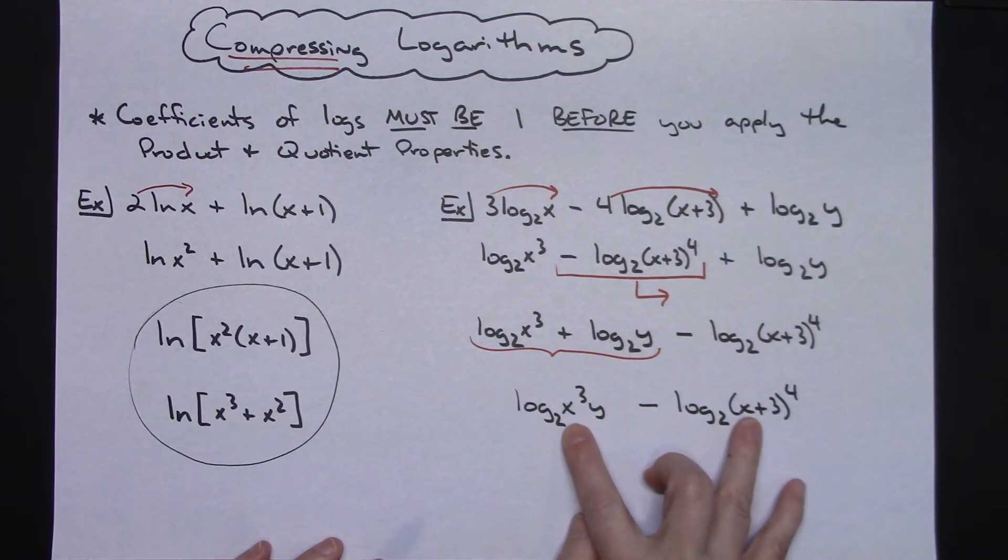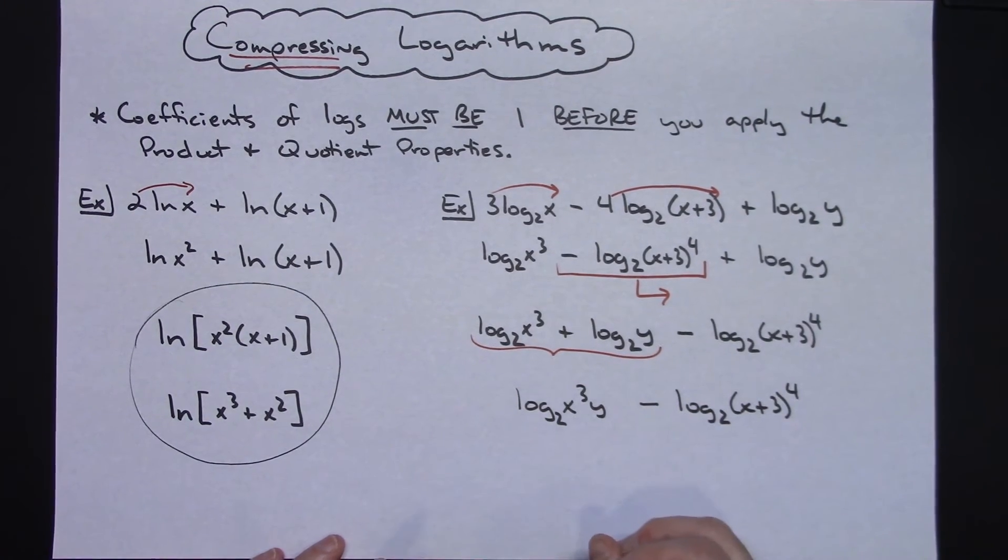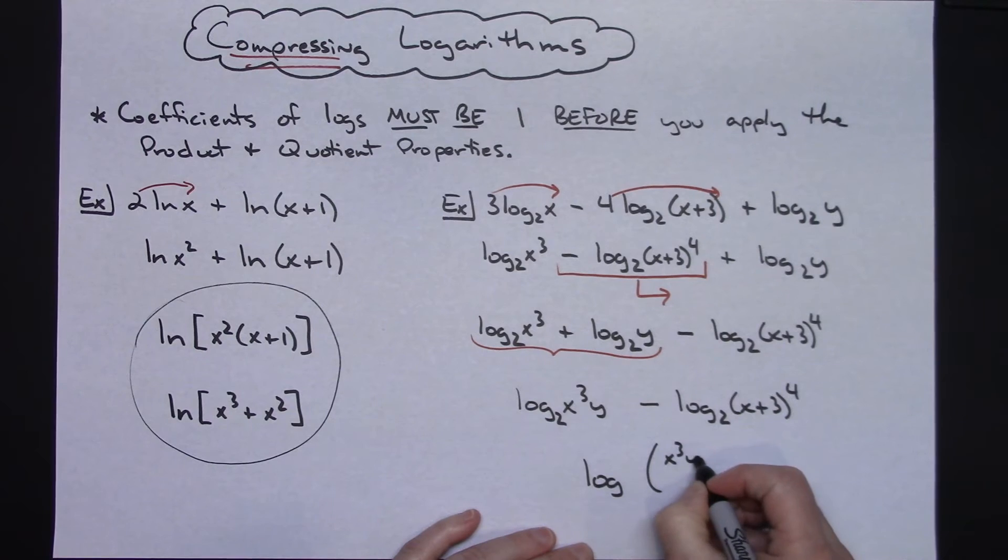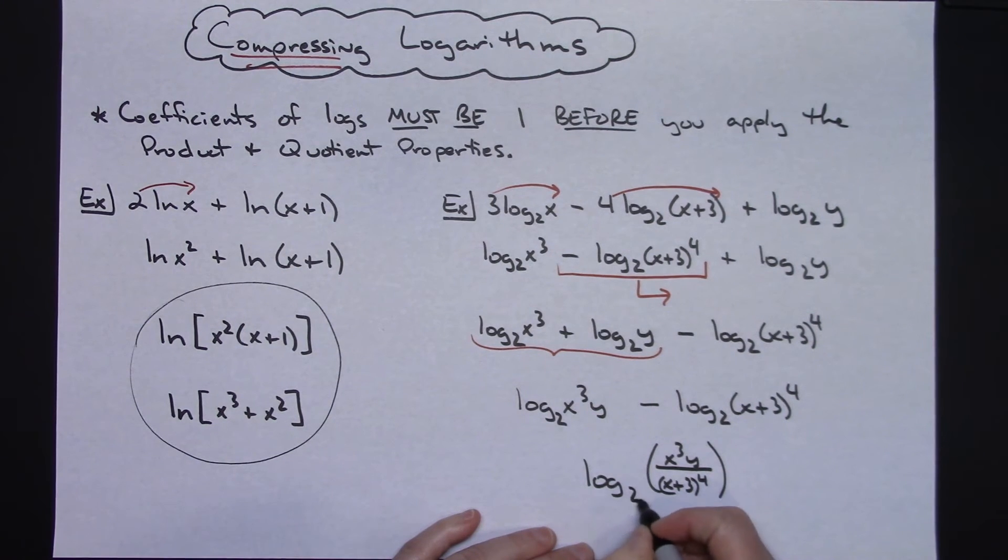Now it makes it real easy. I can see what needs to be divided for my quotient there. I've got two logs with the same base and I am subtracting so now I can put those together as a quotient single log. So then I would have the log of x to the third y over (x+3) to the fourth power and then base 2.